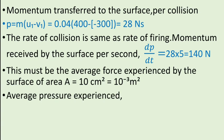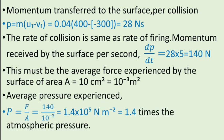Now average pressure experienced is given by pressure P is equal to F upon A. After substituting the given values we get P is equal to 140 divided by 10 raised to minus 3. After simplification we get P is equal to 1.4 into 10 raised to 5 newton per square meter. That is nearly equal to 1.4 times the atmospheric pressure. Thank you.